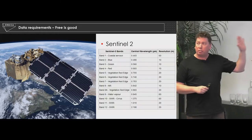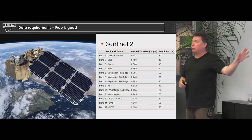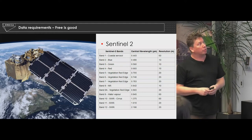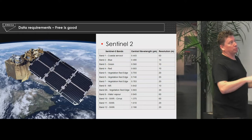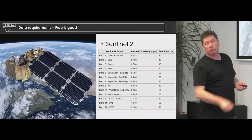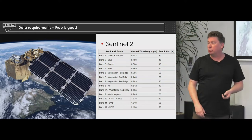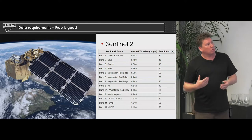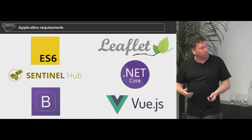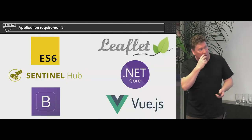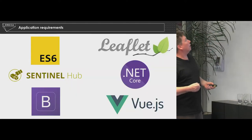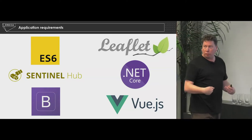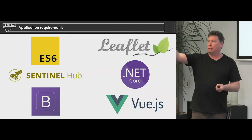Sentinel-2 is very spectrally rich — you can do a lot with it. It's 12 bands of data that come through at various resolutions from 10 meters up to 60 meter resolution, but for free data it's incredibly rich. We started building a website — I started building a website and it was awful.